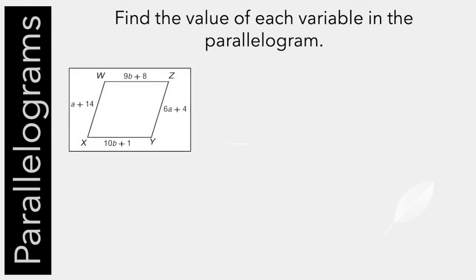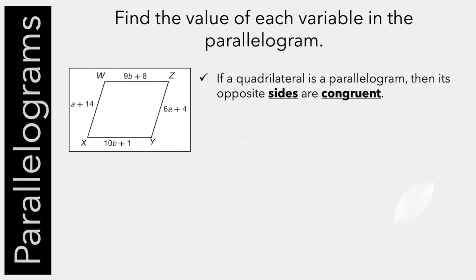Okay, we'll get a little bit more complicated. But the same things hold true. We know that opposite sides are congruent. So we know that A plus 14 equals 6A plus 4. We have to solve for A. So we'll subtract A from both sides, subtract 4 from both sides, divide both sides by 5, and we see that A equals 2.